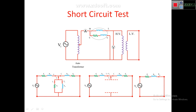The short circuit test is conducted on the HV side, so all instruments are connected on the HV side. The circuit has a voltage source and an auto transformer to provide the necessary current. Since current is important here, the ammeter is placed immediately after the auto transformer, followed by the wattmeter, and the voltmeter is connected accordingly.